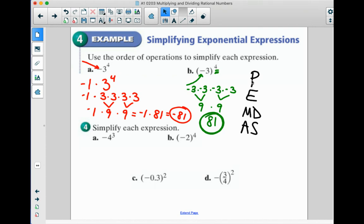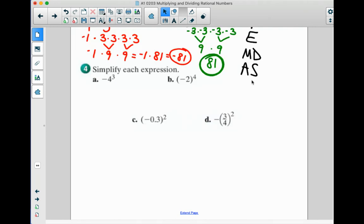So like on 4a down here, that negative 4 to the 3rd, because the exponent is odd, it doesn't really matter. It'll come out negative either way. So try these out, pause here, and I'll work them, check them.